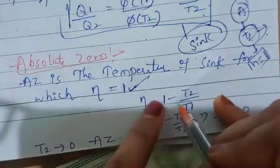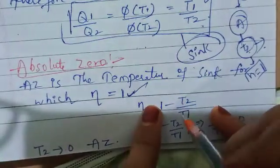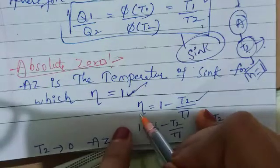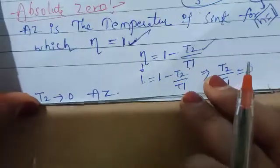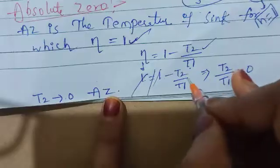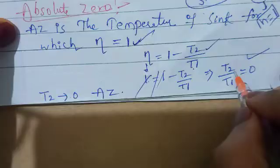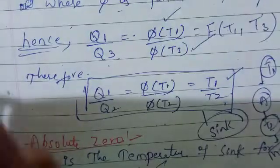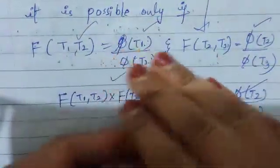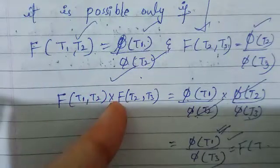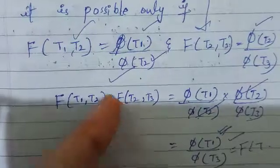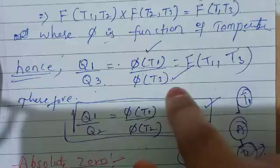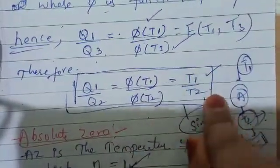The formula is: η = 1 minus Q2/Q1 = 1 minus T2/T1. For absolute zero, efficiency equals 1. So 1 = 1 minus T2/T1, which gives T2/T1 = 0, and therefore T2 = 0, which is known as absolute zero. So Q1 by Q3 equals T1 by T3, and Q1 by Q2 equals T1 by T2, confirming the Kelvin scale.